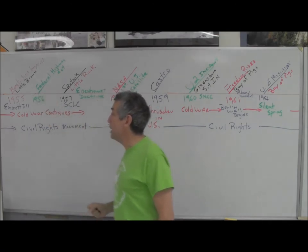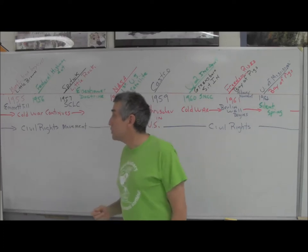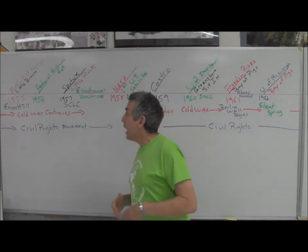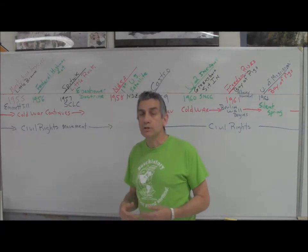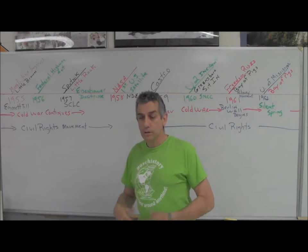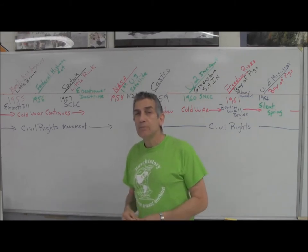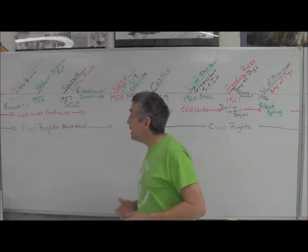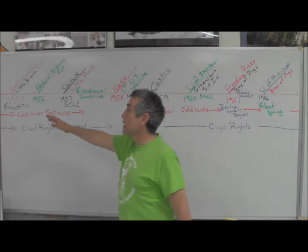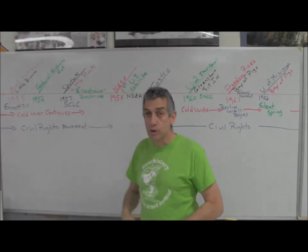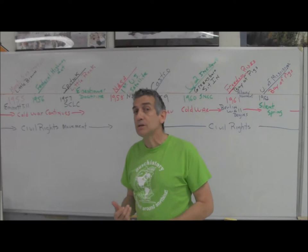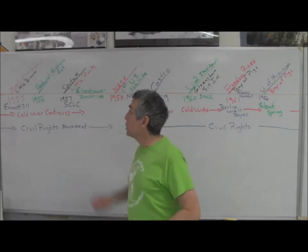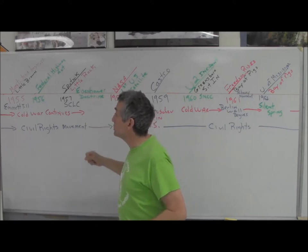We also have what some people call Brown Two or Little Brown. That was the Supreme Court reconvening in 1955 at the request of several Southern states. The Supreme Court says you are going to integrate at all best speed, which the Southern states aren't thrilled with. The Cold War is going on at the same time, and the civil rights movement is really starting to pick up speed.